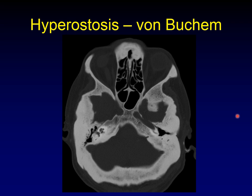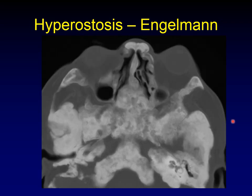Now we're getting into the zebras. Von Buchem's disease is an enostosis that affects a variety of bones including the jaw and skull, appearing as a thickening with a thickened cortex and thickened trabecular central pattern — very similar to fibrous dysplasia, but tends to be more diffuse within the skull. Another zebra is Engelmann's disease, with a more pagetoid look to this hyperostotic disease that affects bones, often diffusely — another good distinguishing characteristic from fibrous dysplasia.